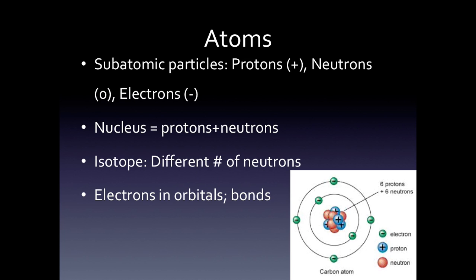Atoms are made up of subatomic particles called protons with a positive charge, neutrons with a neutral charge, and electrons with a negative charge. The nucleus in the middle is made up of protons and neutrons. An isotope is an atom that has a different number of neutrons — all isotopes have the same number of protons but differ in the number of neutrons. Electrons are found in orbitals surrounding the nucleus and carry negative charges.